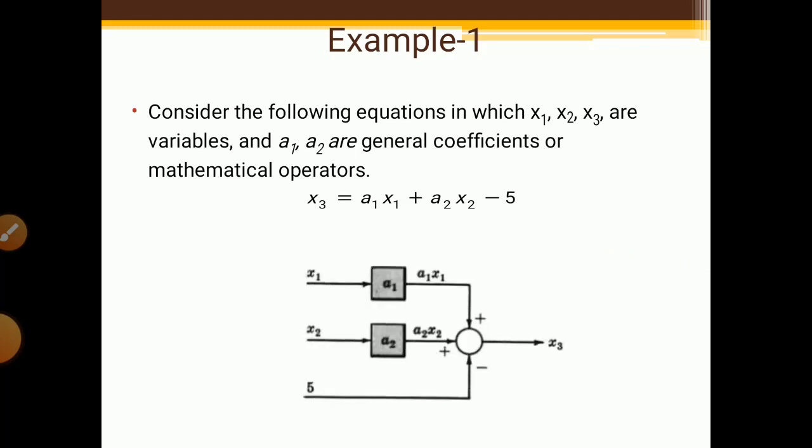You can also represent the same equation by writing X1 as input with constant A1 inside the block, giving A1·X1 on the output side. Similarly, write X2 as input with A2 inside the block to get A2·X2, and the third line is 5. So you can write constants inside the block — this is an alternative representation.